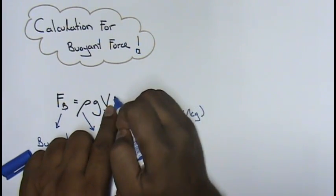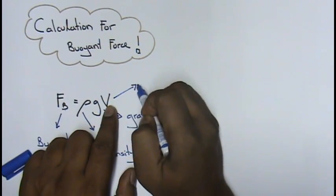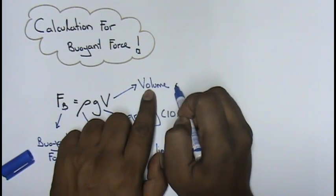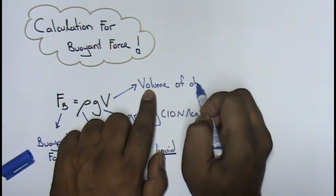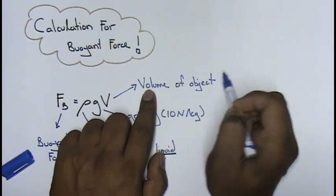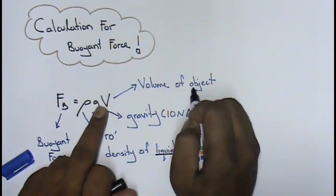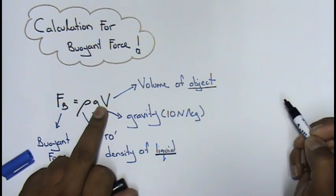Now your V over here stands for volume. And this, my dear students, is the volume of object. So you see, this is over here the density of liquid, and that one over here, V is the volume of object.